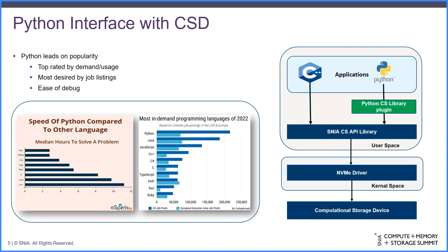The figure on the right side depicts how Python can be interfaced with computational storage devices. As mentioned earlier, the Python library interfaces with the SNIA CS library and provides all the necessary ingredients to have seamless operations with computational storage. Let's look at the Python library in more detail.